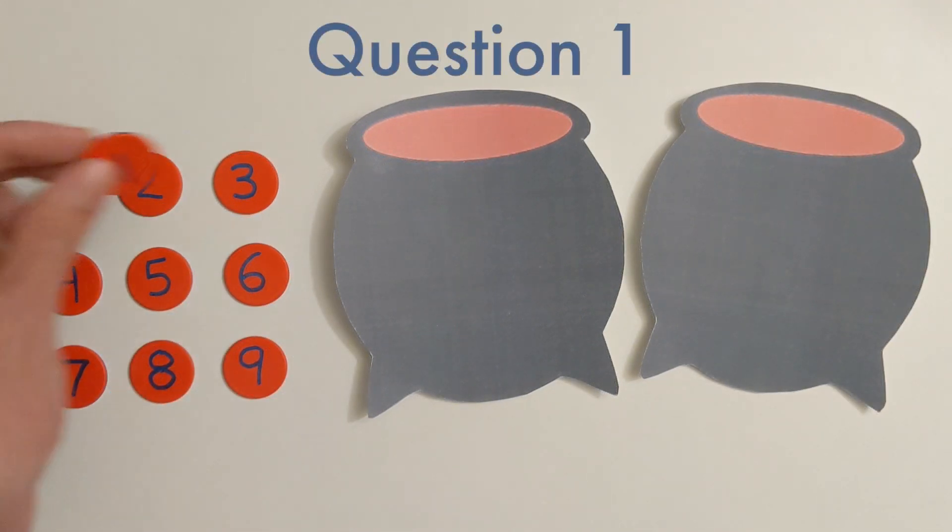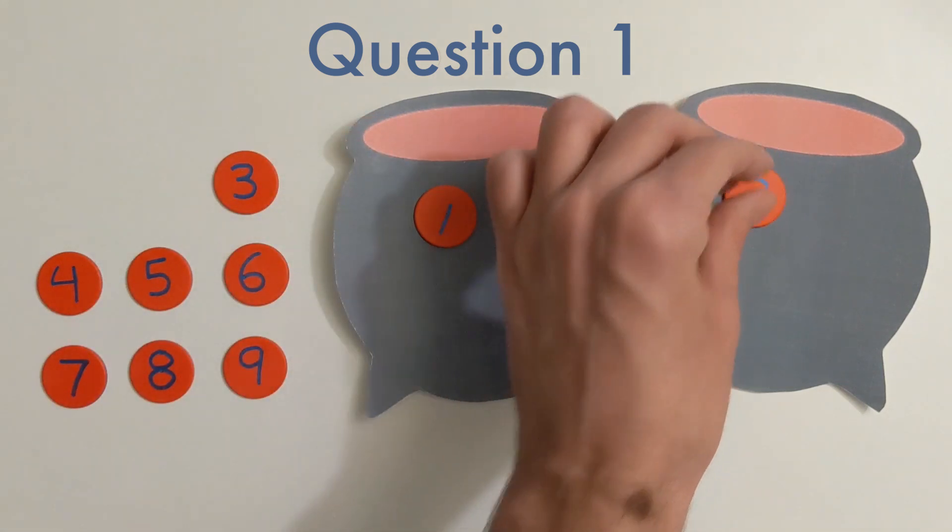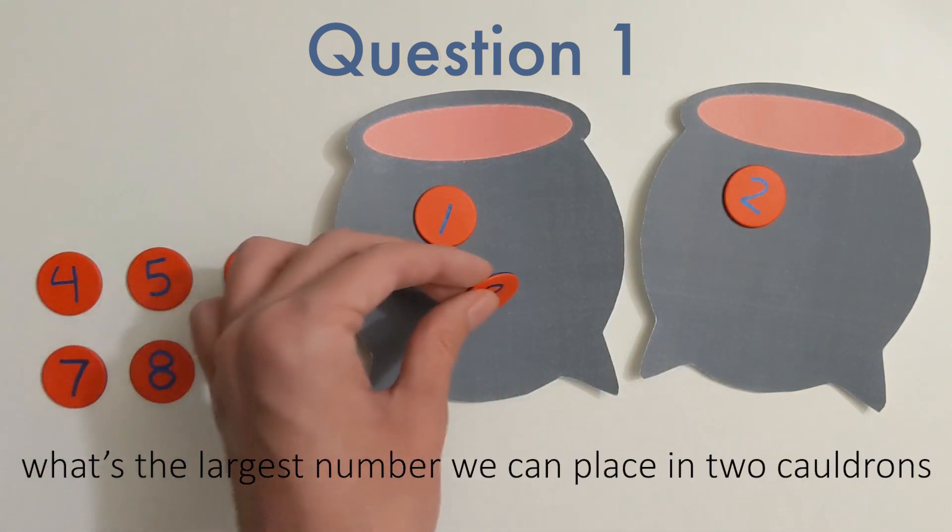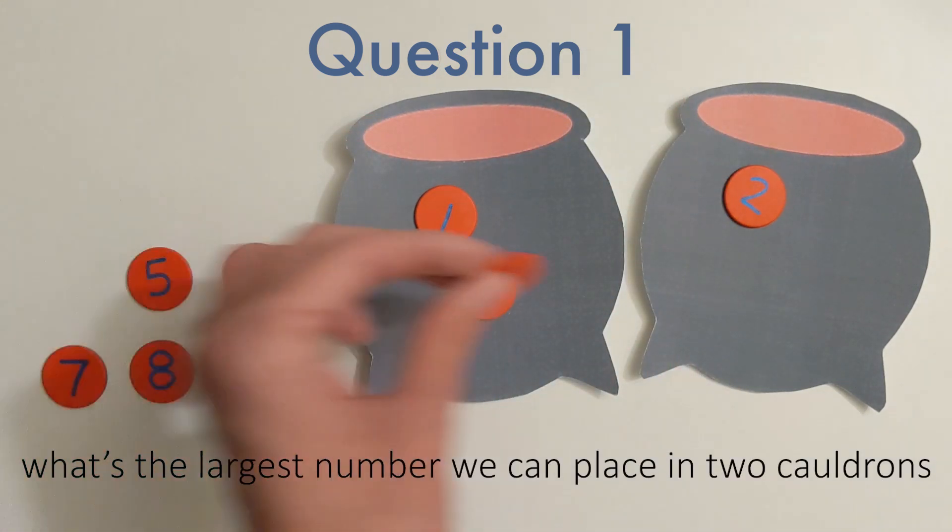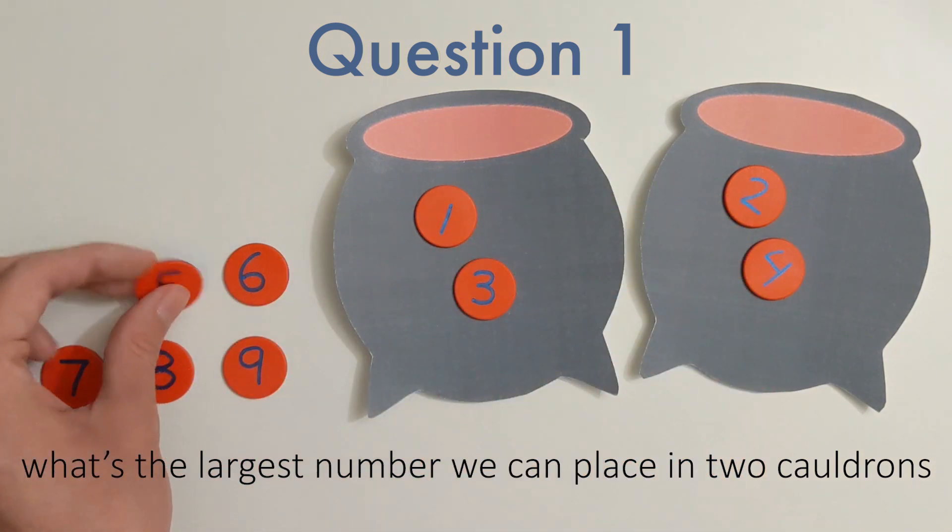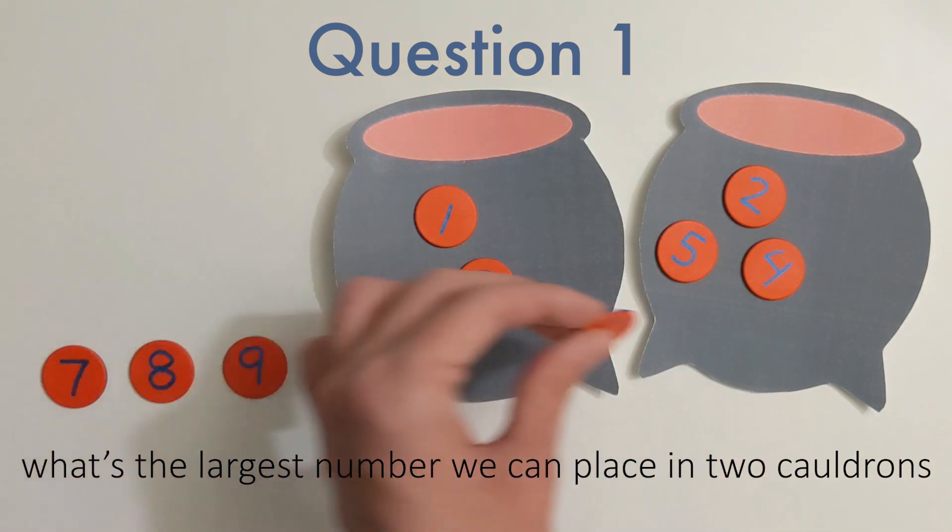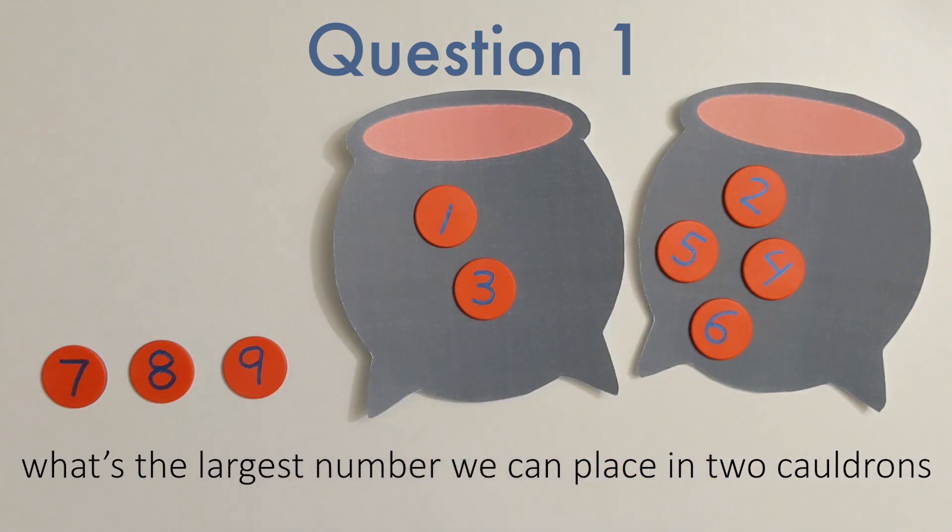Our first question is, starting with the number 1 and placing our numbers in ascending order without skipping any, how high can we go without causing one of our cauldrons to bubble over and explode? In my example, you see I get to the number 6 before causing my right cauldron to explode. What's the largest number you can reach? Keep trying until you think you get the largest possible number.